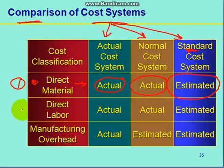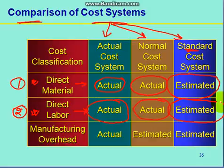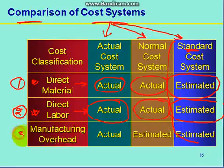The second classification factor is direct labor. In the actual cost system, we take the actual value of the direct labor. In the normal cost system also, we take the actual value. In the standard cost system, we take the estimated value. In fact, in the standard cost system, all values are taken in an estimated manner, including the third factor — manufacturing overhead.